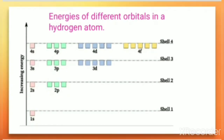This is because the energies of various orbitals in a hydrogen atom depend only upon the value of the principal quantum number n, and are independent of the azimuthal quantum number l. In other words, all subshells in a given principal shell — s, p, d, and f — have the same energy. For example, in the second shell 2s and 2p have the same energy, and in the third shell 3s, 3p, and 3d have the same energy.